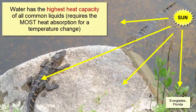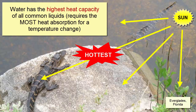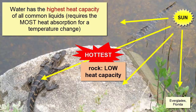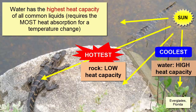Although the same amount of heat is being transferred by the sun to all parts of this environment, they do not all have the same temperature. The object with the highest temperature is the rock — it has a low heat capacity. The coolest location is the water, which has a high heat capacity and will remain cool even with lots of added daily heat.